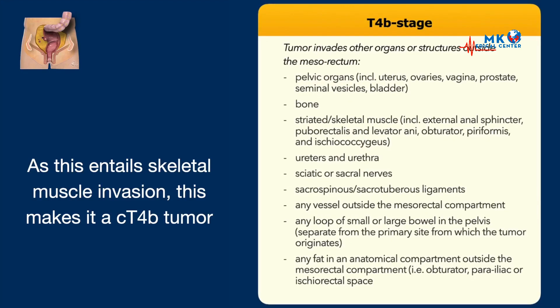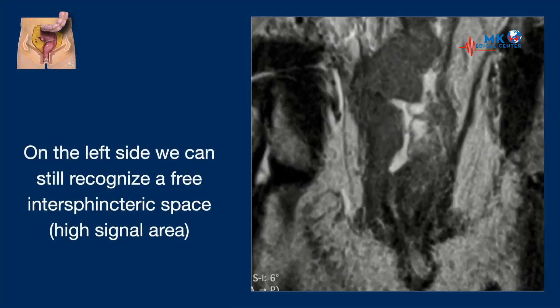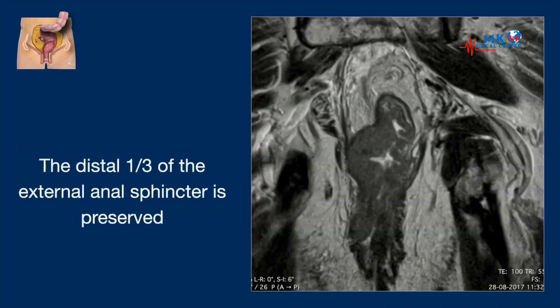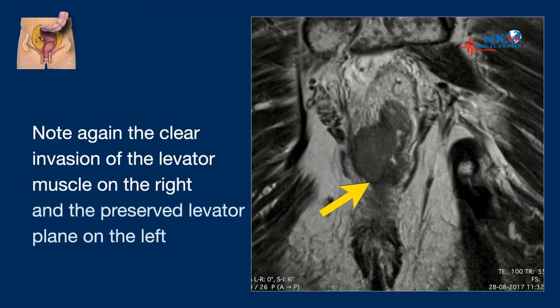This makes this tumor a clinical T4b, because T4b means invasion in two pelvic organs, bone, but also skeletal muscle — like for instance the puborectalis and the levator anii. On the left side we can still recognize a free intersphincteric space with high signal. There is a normal external anal sphincter and a normal levator anii. The distal third of the external anal sphincter is preserved. Note again the clear invasion of the levator muscle on the right side and the preserved levator plane on the left.